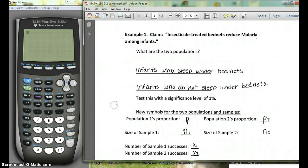So the claim is that insecticide treated bed nets reduce malaria among infants. So we've got two different populations, the infants who sleep under the bed nets and the ones who don't sleep under the bed nets. And we're going to test this with our alpha being 0.01, a 1% significance level.